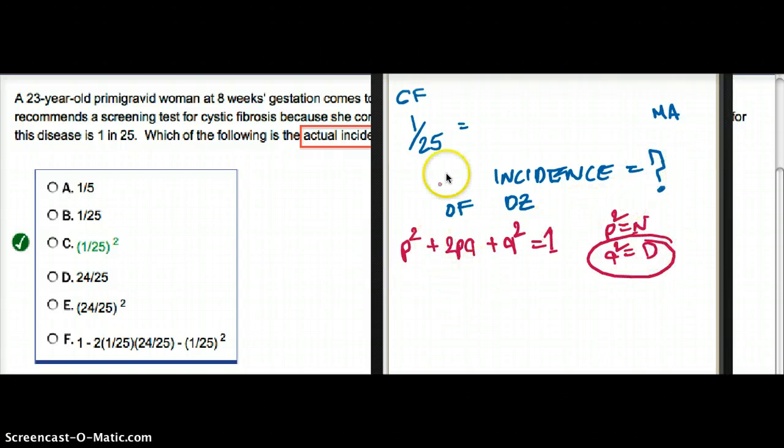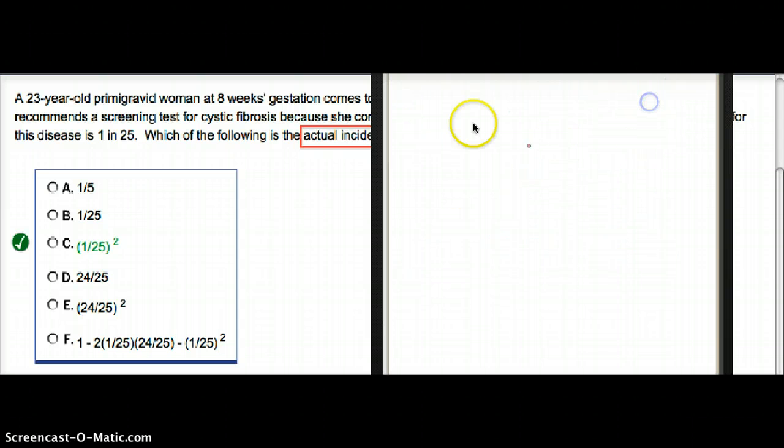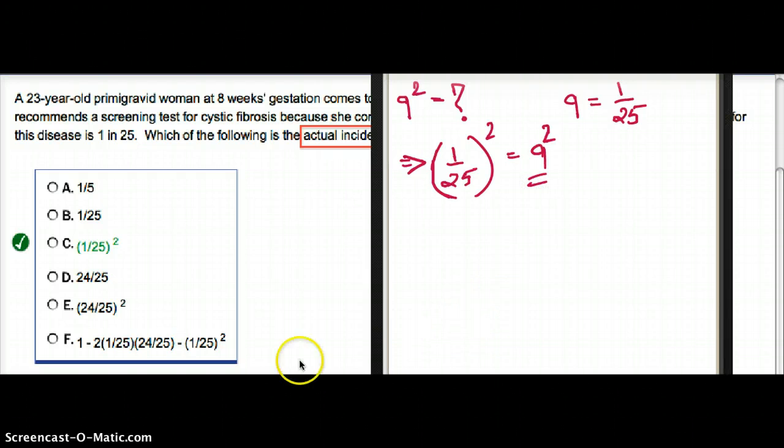What we have to find is Q squared. We already have the frequency of the allele. The frequency of the allele, or Q, is equal to 1 out of 25. So Q squared, or the actual incidence of the disease, is going to be 1 out of 25 squared is equal to Q squared. That is going to be the incidence of the disease.